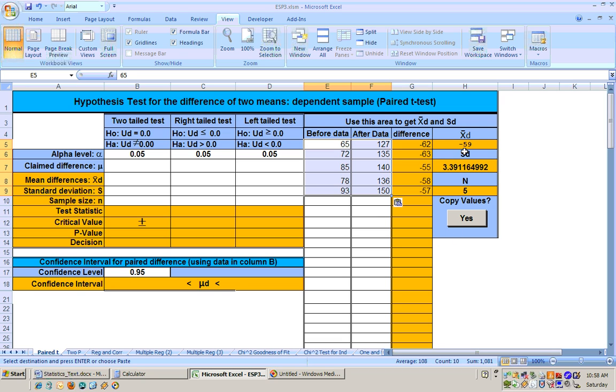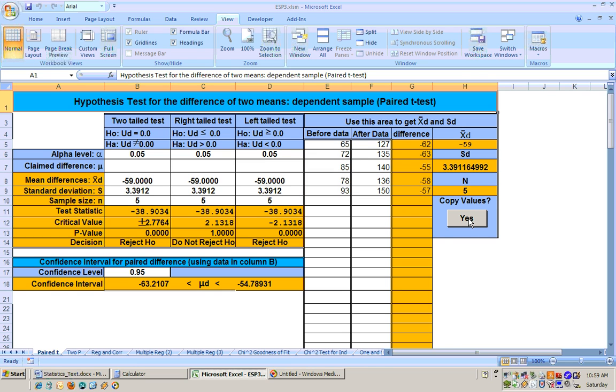And we get that data in. And then we can copy. Here's your average difference. The heart rate increased. The average increase in heart rate for these five people is 59, with a standard deviation 3.39. And here's the number of people that you sampled. Click the Yes button, and it copies the data all over the place.